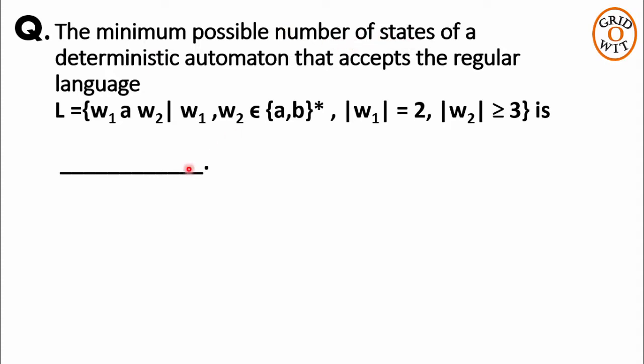Let us take an example to understand this language. On the left side of single a we have w1 which is of length exactly 2. On the first position we can have either a or b. On the second position we can have either a or b.